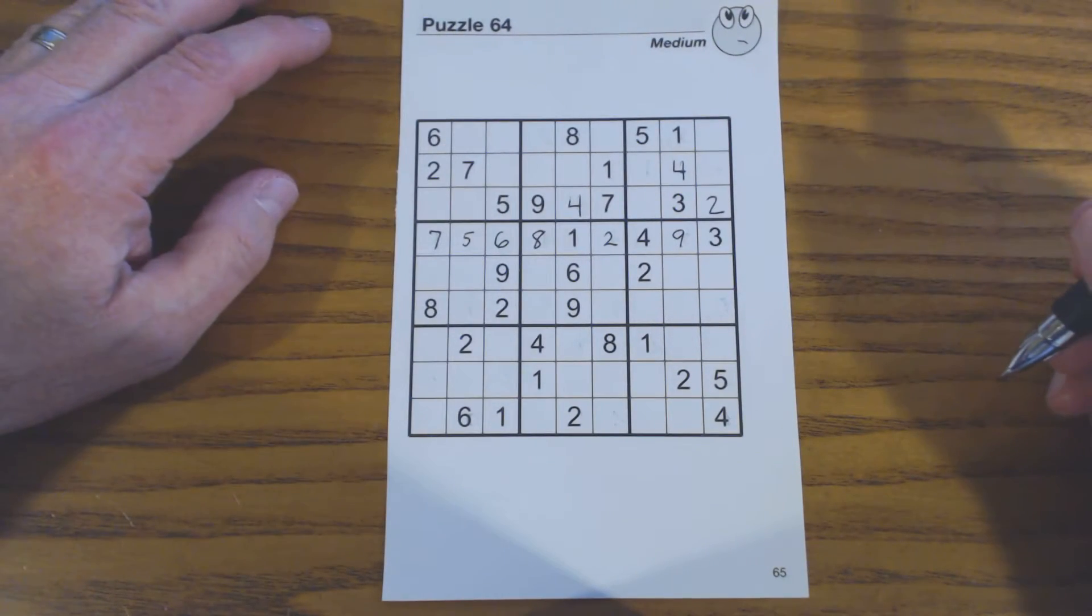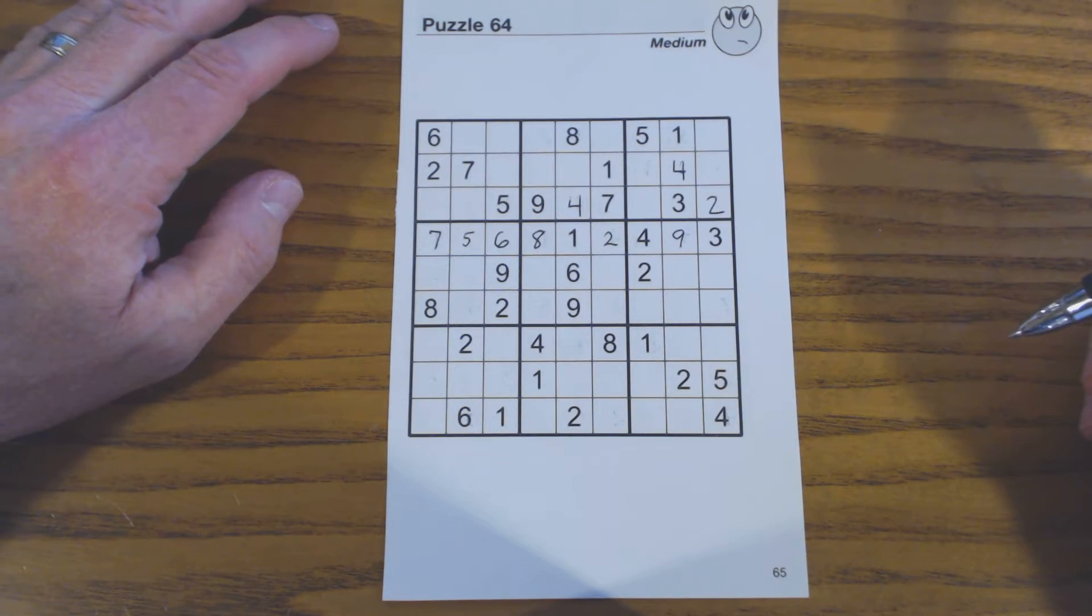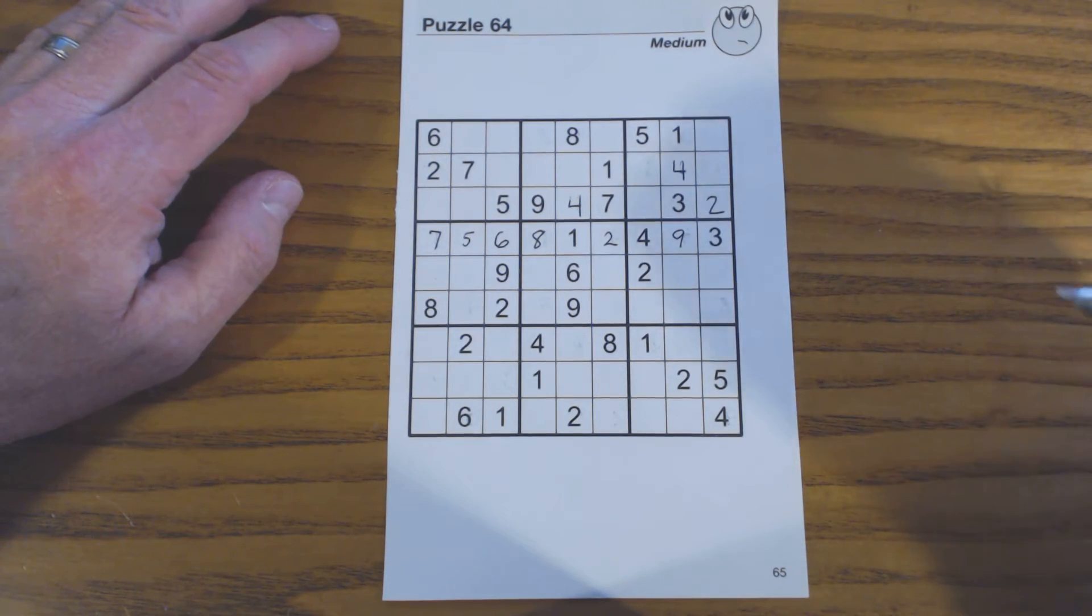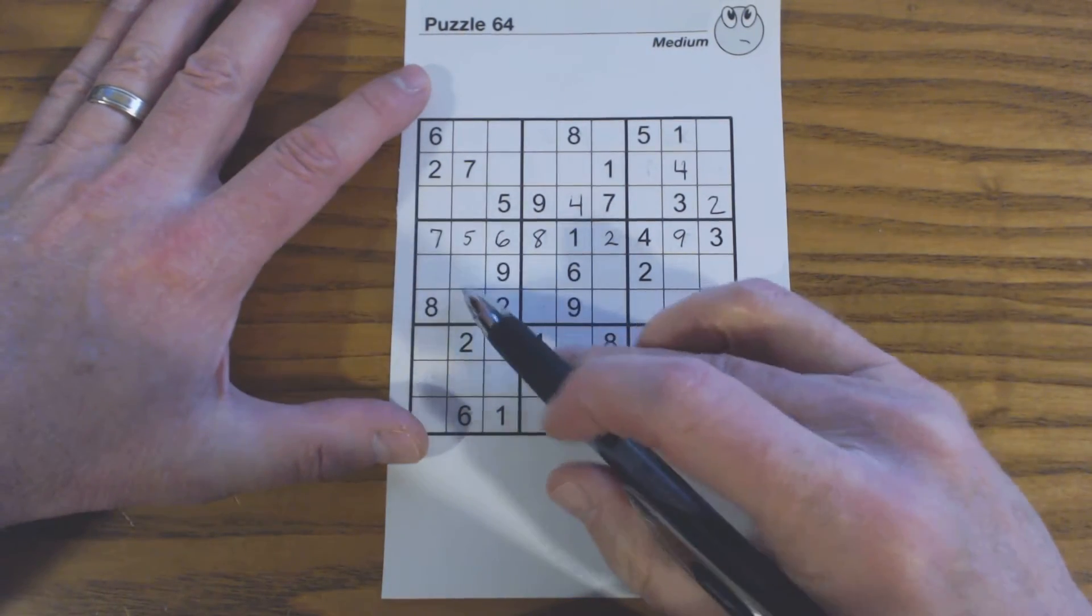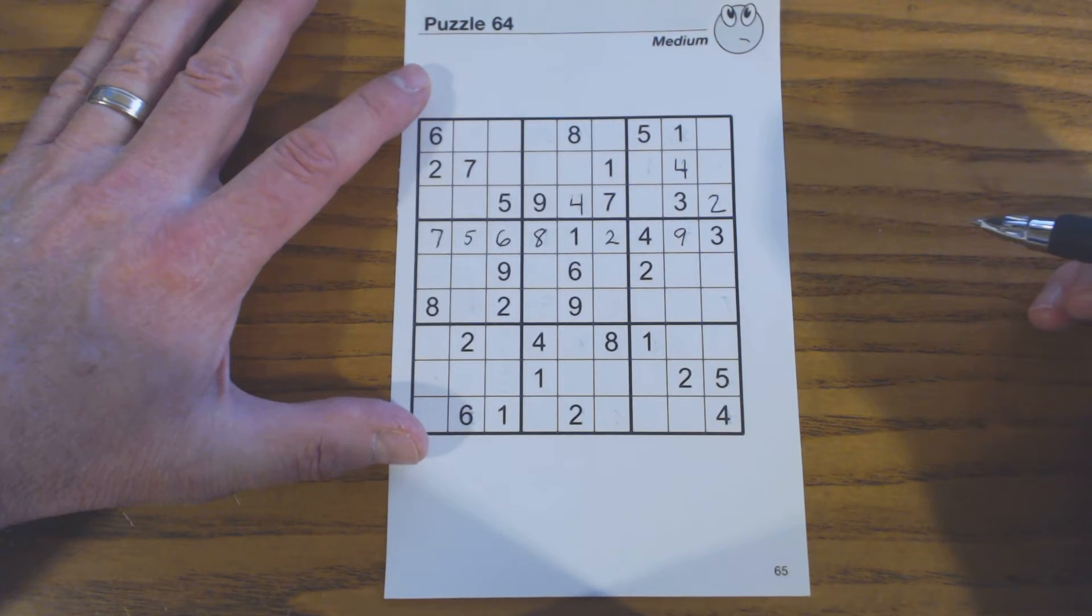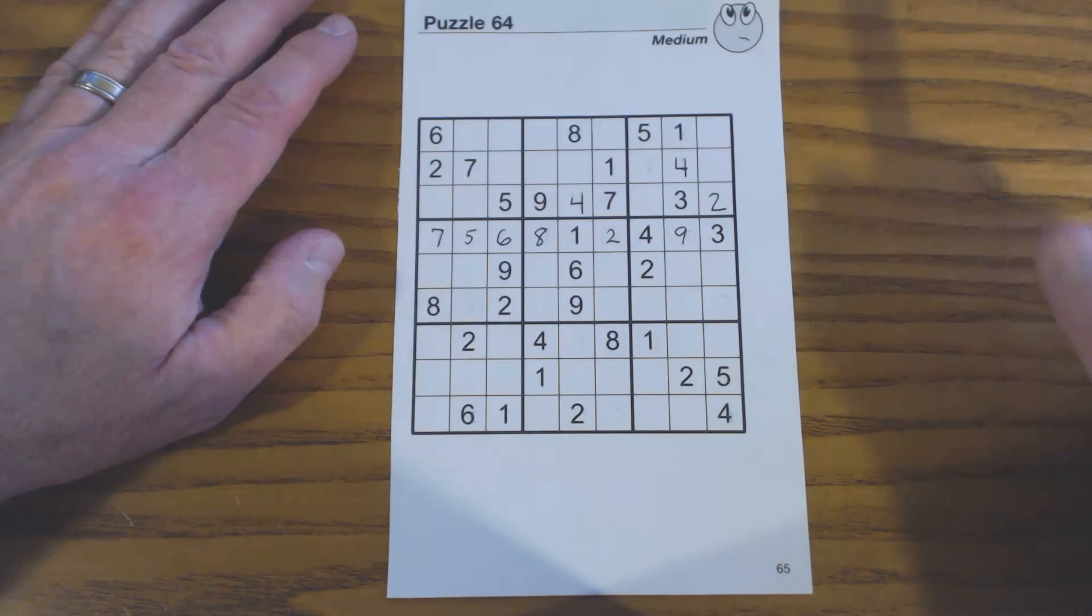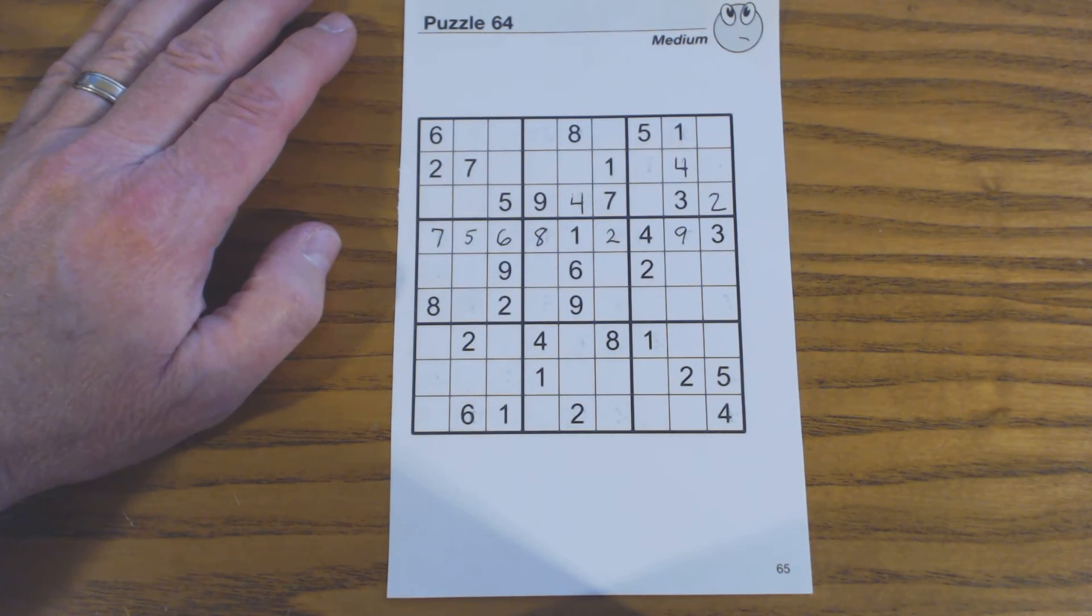Now we wouldn't have been able to fill in any of those numbers on that row. But since we found these triplets here, that enabled us to fill in that entire row. So that's the power of twins and triplets, and it really works well on more difficult puzzles. It really helps you a lot.